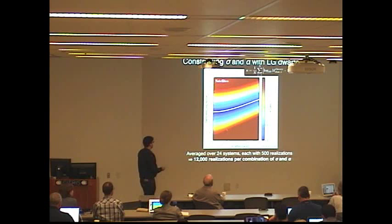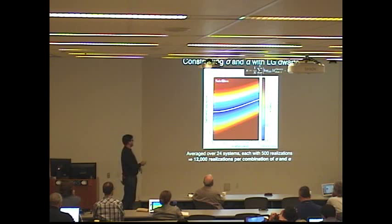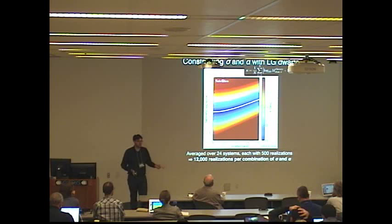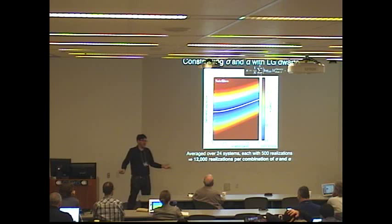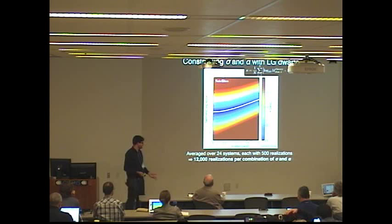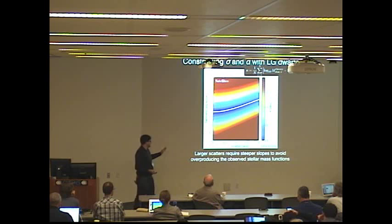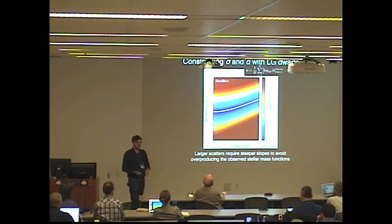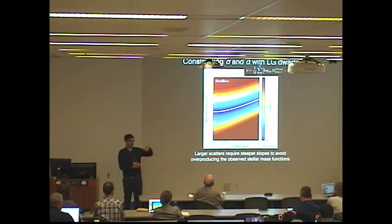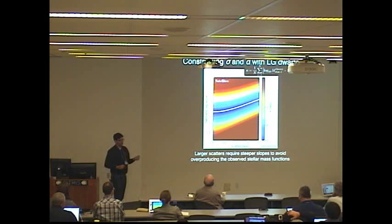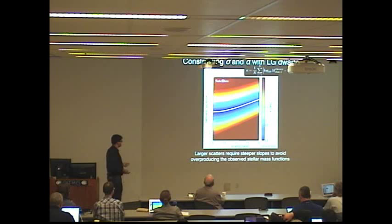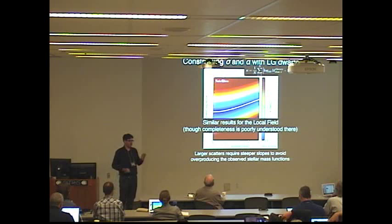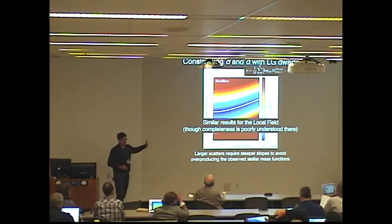So here are our results. The color coding is kappa, so blue is the best. The white line shows the absolute minimum, the best fit relation. First thing you can take away is that it's completely degenerate between scatter and slope, so no, we can't constrain the scatter unfortunately. We also can't constrain the slope, but we can constrain the two of them together. The second thing, probably not terribly surprising, is you need a steeper slope as you turn your scatter up. We know the subhalo mass function is rising pretty steeply, so you'll have more objects that are small that scatter up than big objects that scatter down. So we need a steeper slope to prevent overproducing our local group galaxy counts. We get similar results for the local field, but completeness is so poorly understood there that I'm not showing those results. Qualitatively they're the same, quantitatively roughly similar.